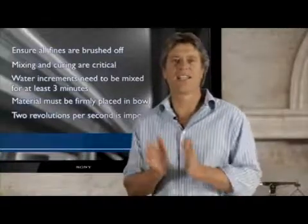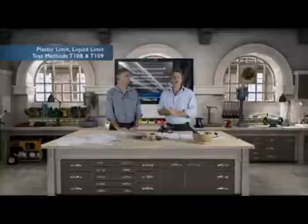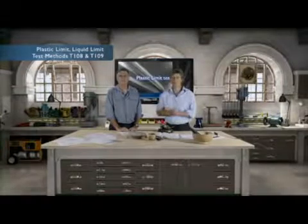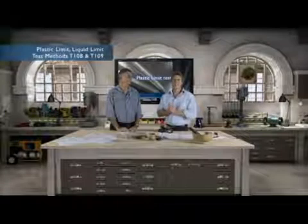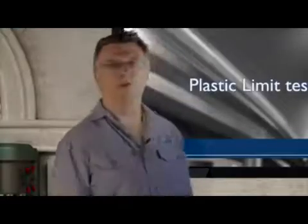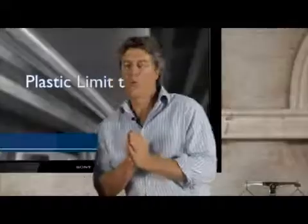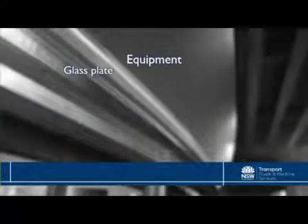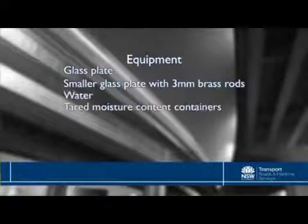So that's the liquid limit test done. Now the next part — the plastic limit. In this test, we're looking to determine the moisture content at which a three millimetre thread of sub-425 micron material can be rolled and just start to break. That shows us the point where the material ceases to be plastic. In terms of specific equipment, we need a glass plate and a smaller glass plate with two three millimetre brass rods for rolling.